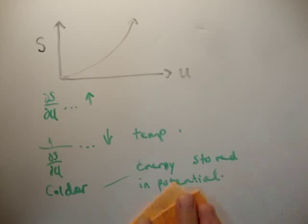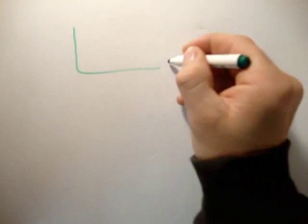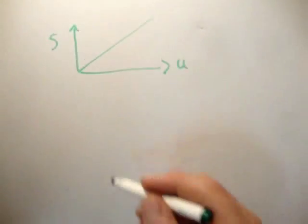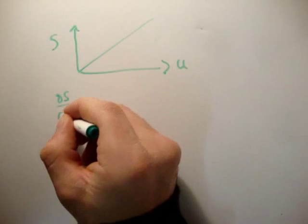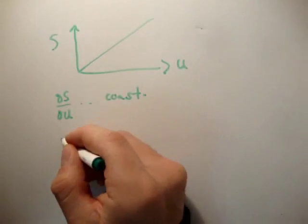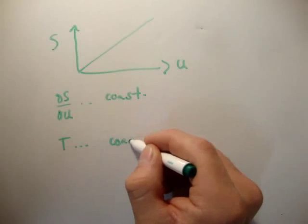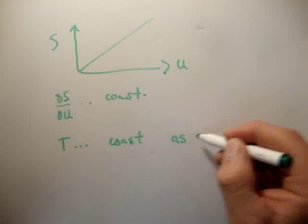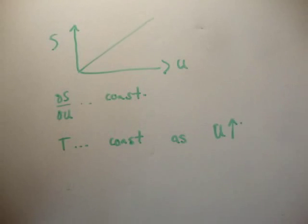And finally, what happens if the S versus U is constant? Let's see that the third and final graph is there's U, there's S and it's constant. Well, del S del U is constant and therefore the temperature of course is constant as U goes up. So as you increase the energy the temperature stays constant.